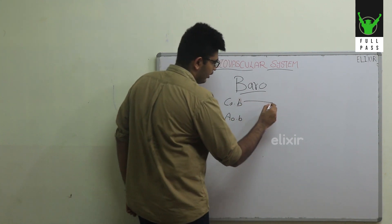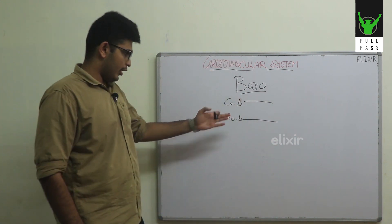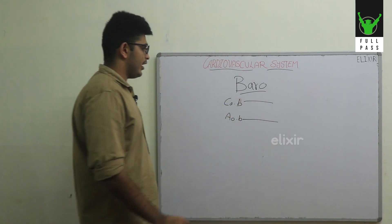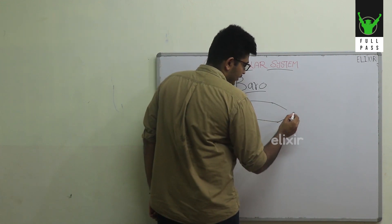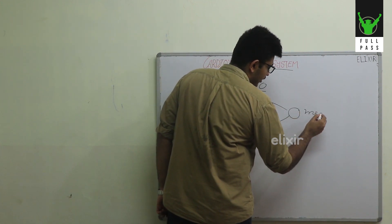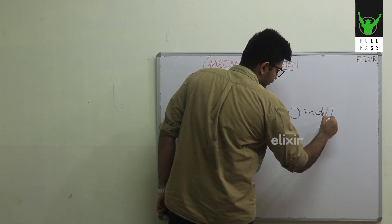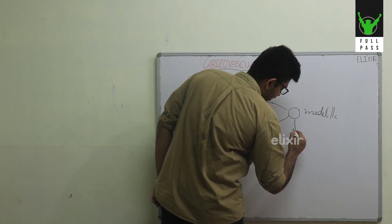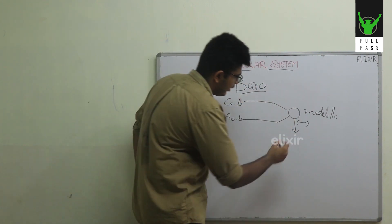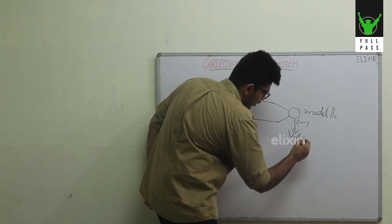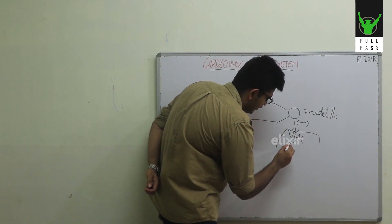The carotid body through the glossopharyngeal nerve and the aortic body through a branch of the vagus nerve all reach a center within the medulla. This medullary center has an inhibitory effect — this is to be noted — an inhibitory effect on the vasomotor center.